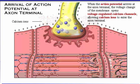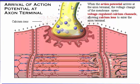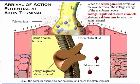When the action potential arrives at the axon terminal, the voltage change of the membrane opens voltage-regulated calcium channels, allowing calcium ions to enter the axon terminal. Click the motor neuron to see the arrival of the action potential, or click the calcium channel to see calcium ions enter the axon terminal.